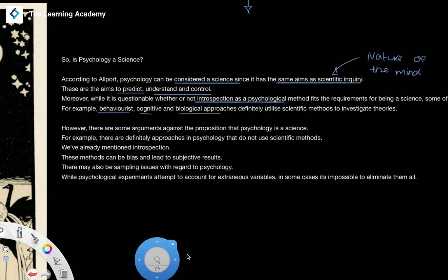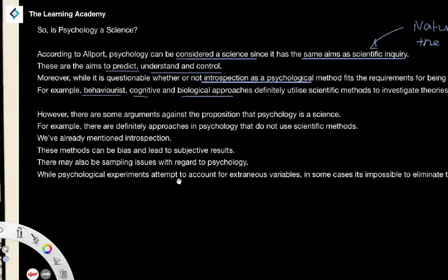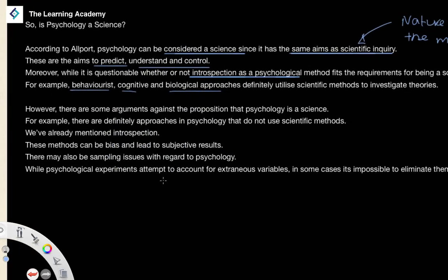What about the kinds of arguments against it? Well, for example, there are definitely some approaches in psychology that are not particularly very scientific, and we've already mentioned the method of introspection, and as we go along and look at other ones, there might be some others that you would argue aren't particularly very scientific, and introspection is a very good example of one that isn't.